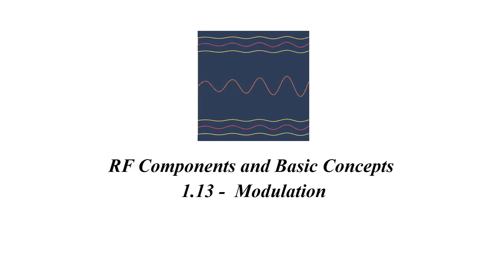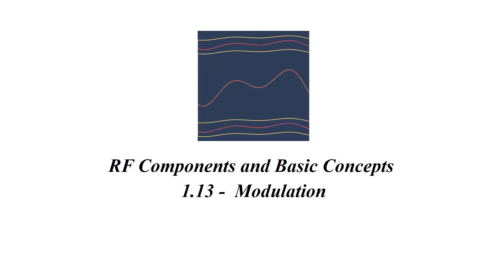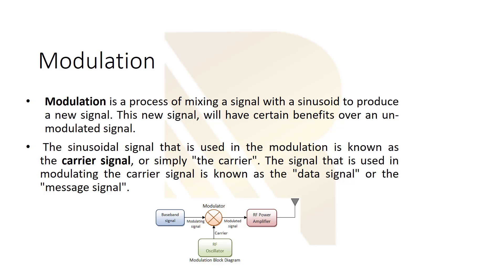In this section we are going to talk about modulation. Modulation is a process of mixing a signal with a sinusoid to produce a new signal. We can't send our data which has a low frequency, so first we have to increase the frequency — in other words, we have to do a frequency shift, and this is the purpose of modulation.